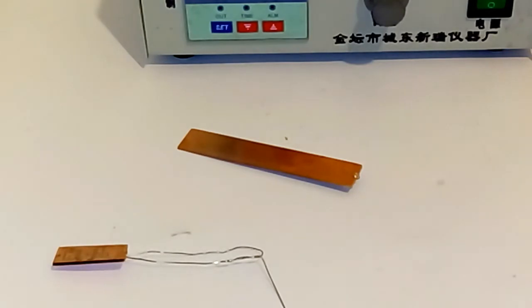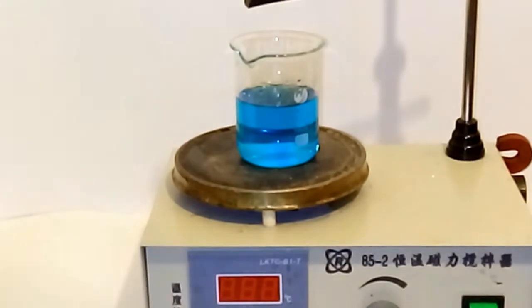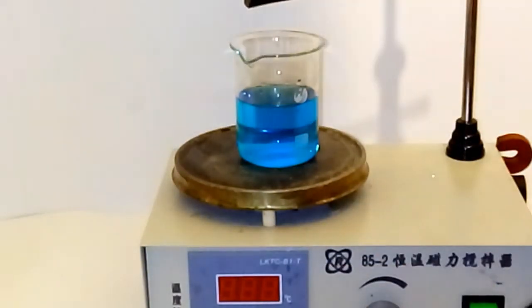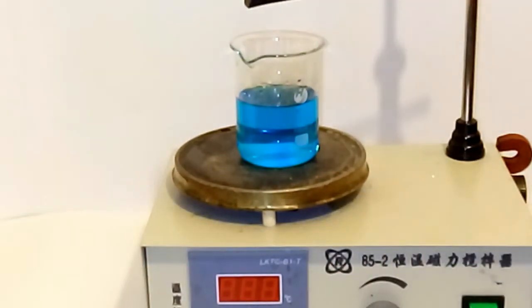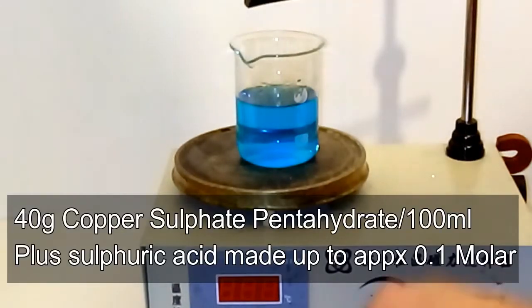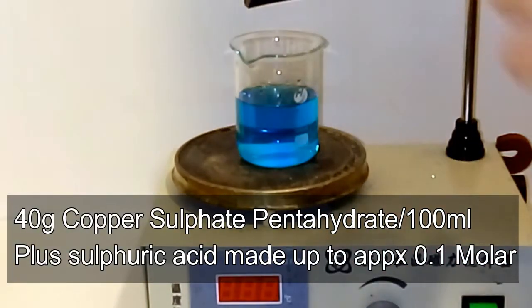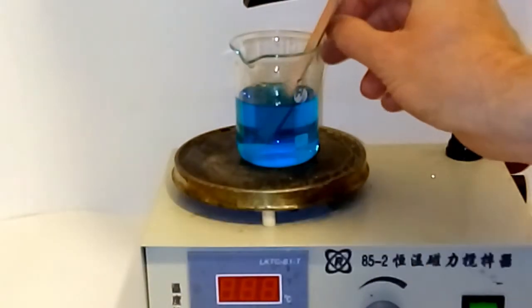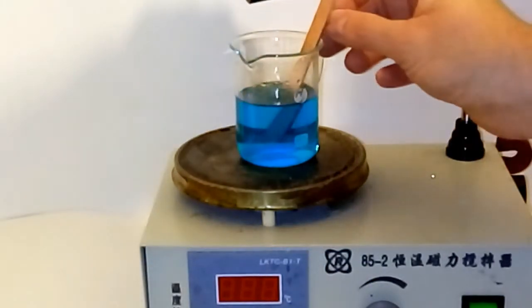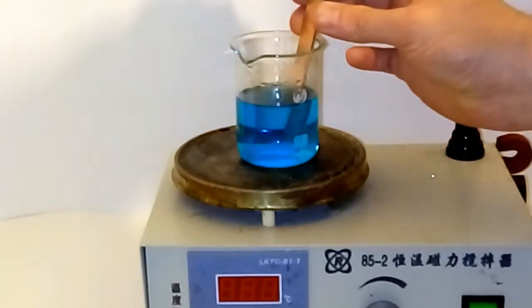To dissolve away the copper we are going to be using an electrolysis reaction. This solution contains about 40 grams of copper per 100 grams which is close to saturation. This will be our cathode which will collect the copper from the reaction.